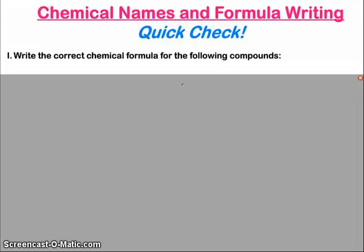Alright, these are the answers to our chemical names and formula writing quick check. So at the top there, we're writing the correct chemical formula. Now remember, when we're writing the correct formula, most of the times we need to find the ions and then put them together so that they get a net ionic charge of zero.